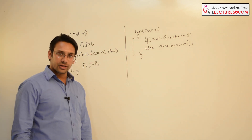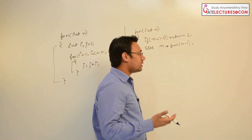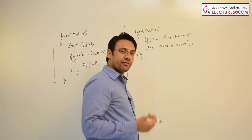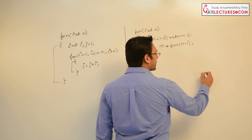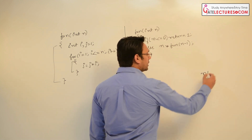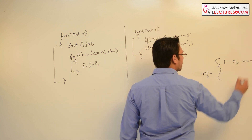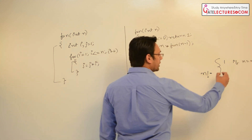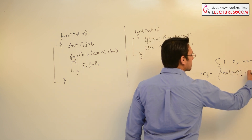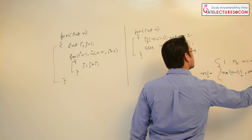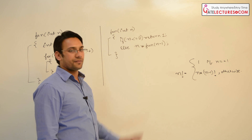How did we derive this recursive function? We already know the mathematical way of finding the factorial of a number. The factorial of n is defined as 1 if n == 1, or n * factorial(n - 1) otherwise. So I am applying the same mathematical definition to this function.